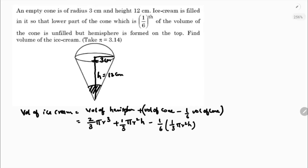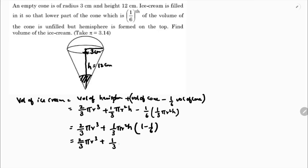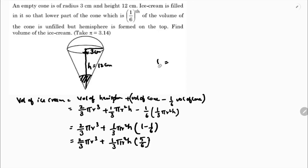So volume of hemisphere is (2/3)πr³. Now taking (1/3)πr²h common, you get one minus one-sixth, which is five-sixths. Because one minus one-sixth: taking LCM 6, we get six minus one over six, which is five-sixths.